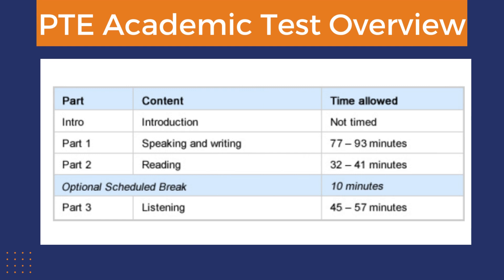The PTE test overview: there is an untimed introduction, then Part 1 is speaking and writing, which is approximately 77 to 93 minutes. Part 2 is the reading section for 32 to 41 minutes. There is an optional scheduled break of 10 minutes. Finally, Part 3 is the listening section for 45 to 57 minutes.